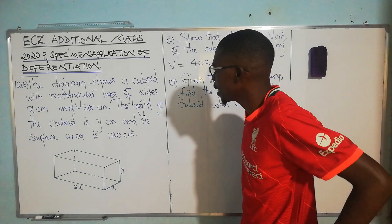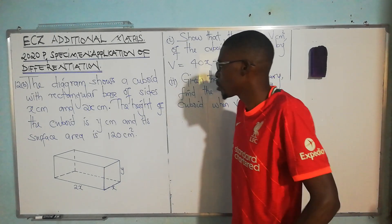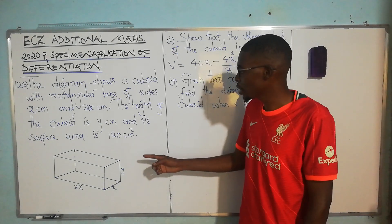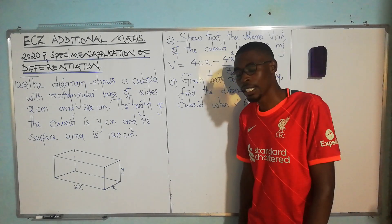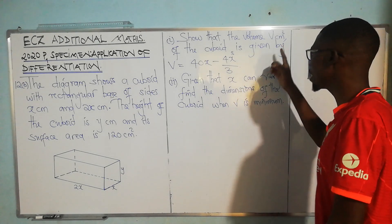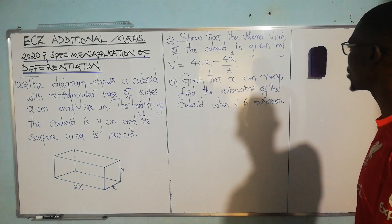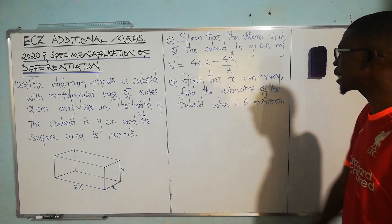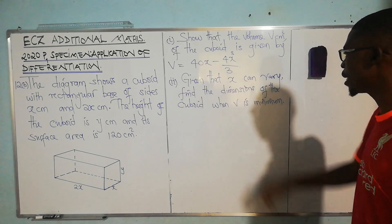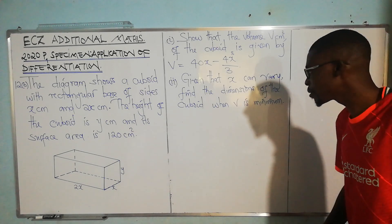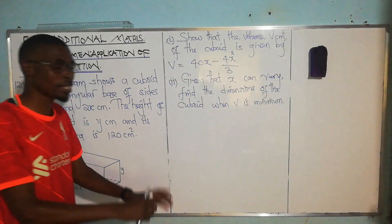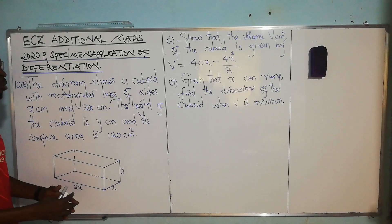Question 12b of paper one says: the diagram shows a cuboid with a rectangular base of sides x centimeters and 2x centimeters. The height of the cuboid is y centimeters and its surface area is 120 square centimeters. We have to show that the volume V cubic centimeters is given by V = 40x minus 4x cubed over 3. The second part asks: given that x can vary, find the dimensions of the cuboid when V is minimum.